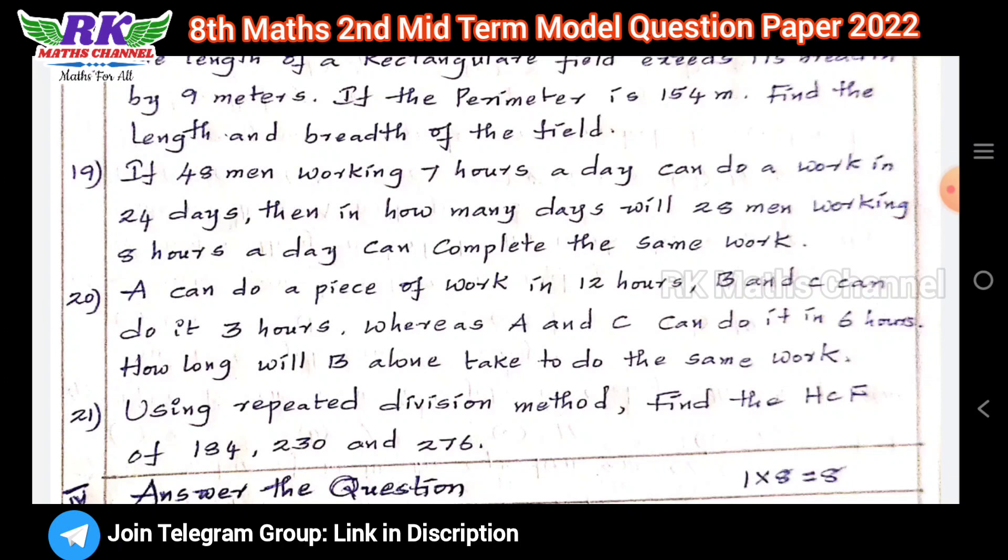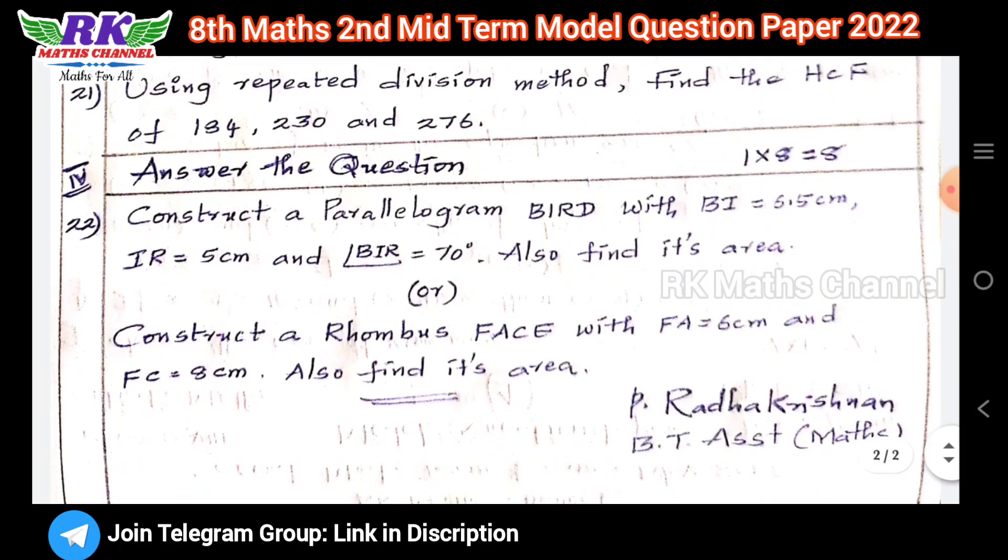Next fourth section is 8 marks for construction. We have parallelogram and rhombus, one construction question. Then there's a traditional area question for 2 marks, same thing that gives 1 mark. The model question paper for second mid-term exam will be useful for you.